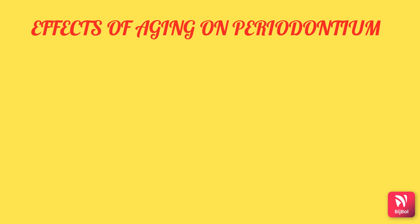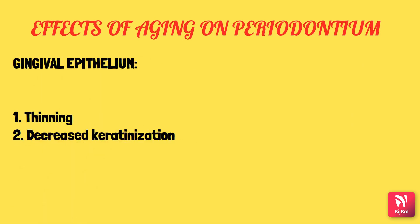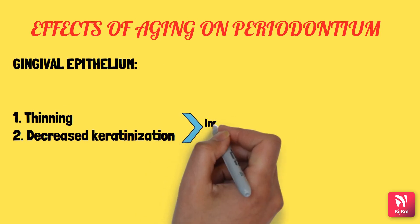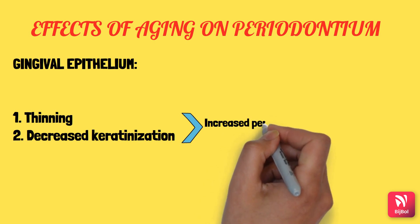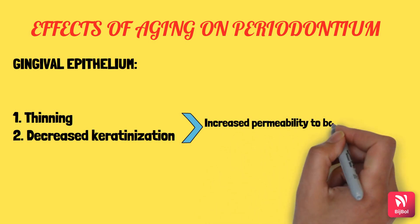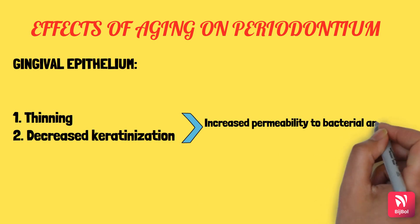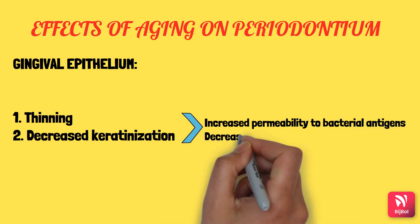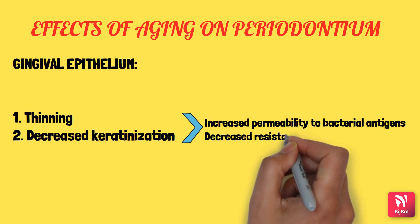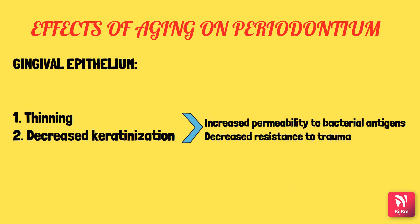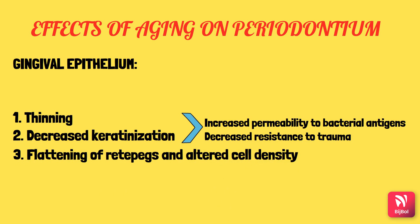The first change is in the gingival epithelium. There is thinning and decreased keratinization of the gingival epithelium. Decreased keratinization automatically means increased permeability to bacterial antigens and decreased resistance to functional trauma and bacteria. Some state there are no age-related changes in the gingival epithelium — controversy exists. Some state there are no changes while others state changes include flattening of the rete pegs and altered cell density.